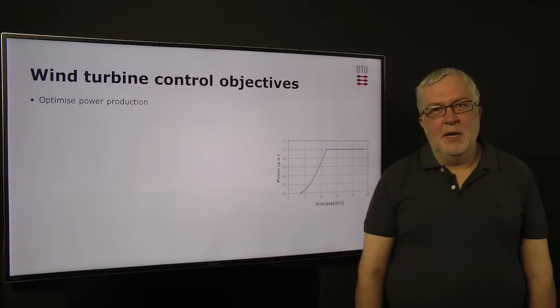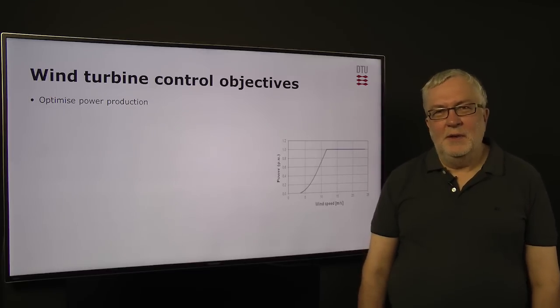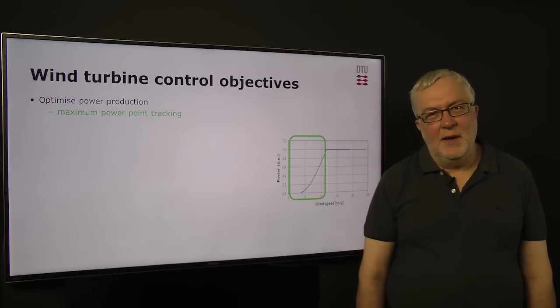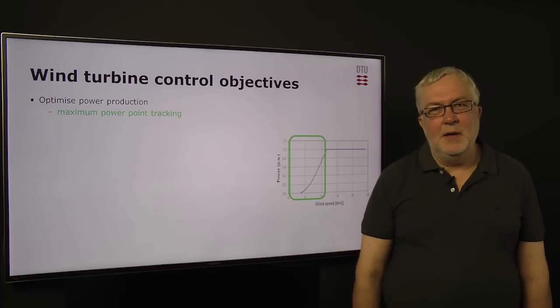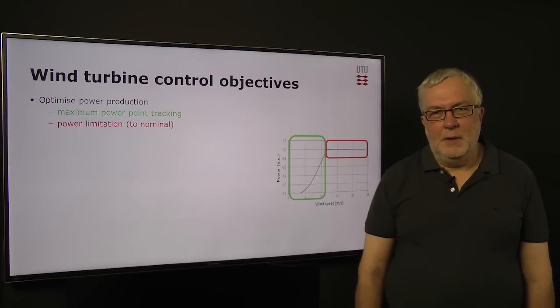So what are the objectives of controlling a wind turbine? First of all, we want to have optimal power production, which means that if the wind speed is lower than a certain nominal value, then we want to produce as much power as possible. Secondly, we want to limit the power to the rated value of the wind turbine, which is seen here in red.